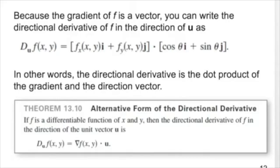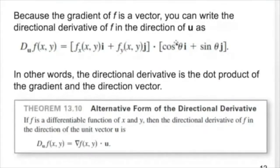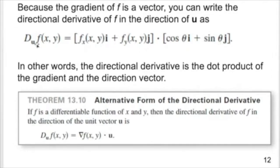In this video we'll discuss the directional derivative using the gradient and the unit vector. We find a relation between the directional derivative Du and the gradient of the same function. It can be written as the dot product of two vectors: the first vector is the gradient, written as fx·i plus fy·j, and the second is the given unit vector. From this formula we can calculate the directional derivative.